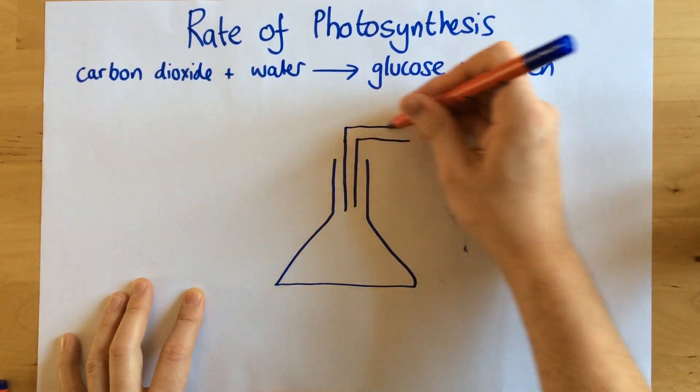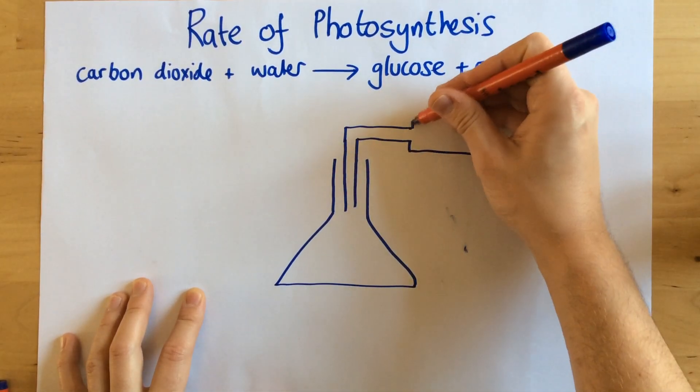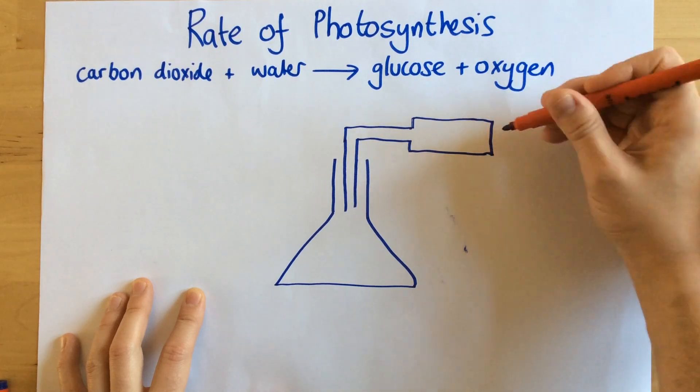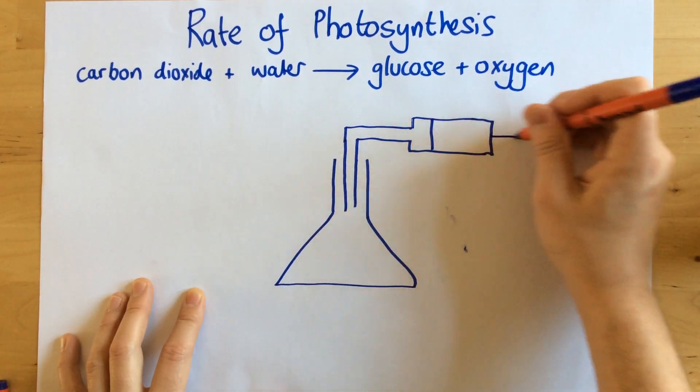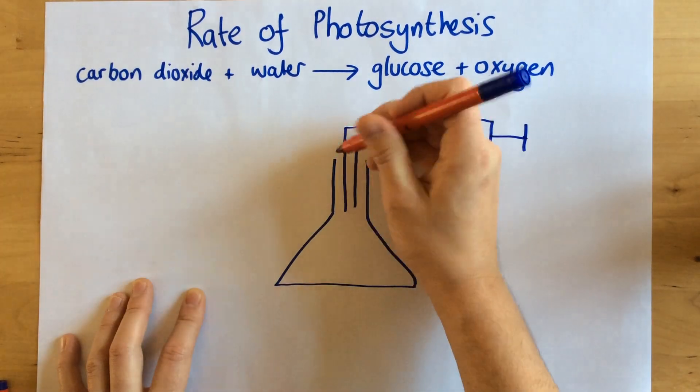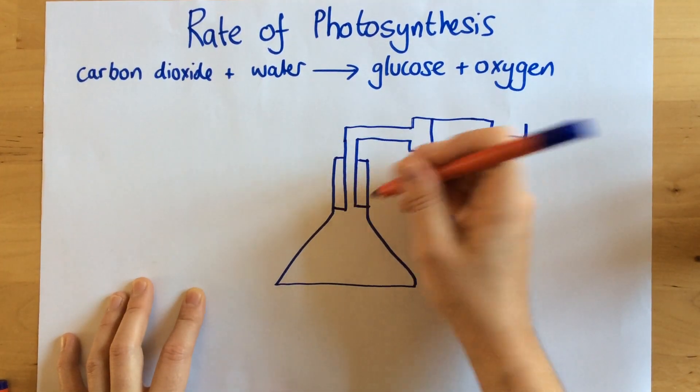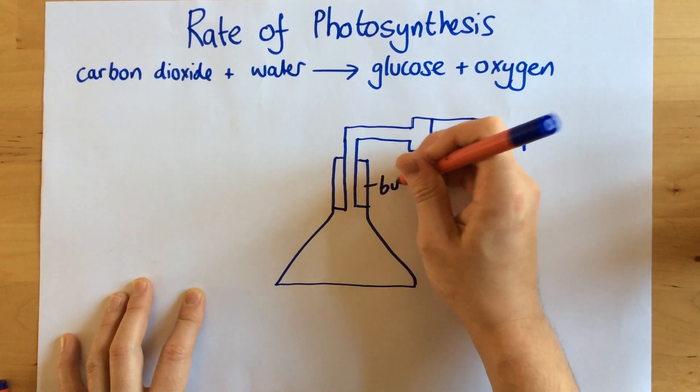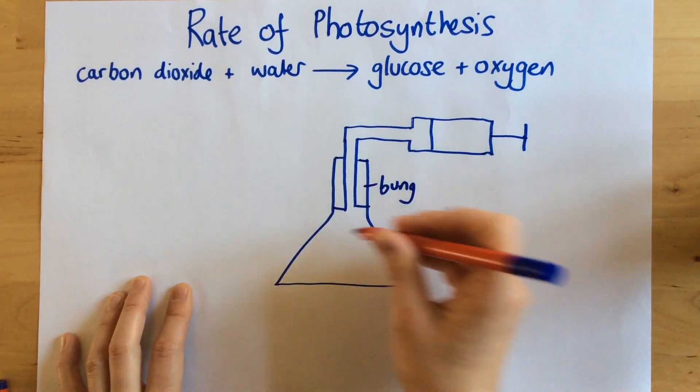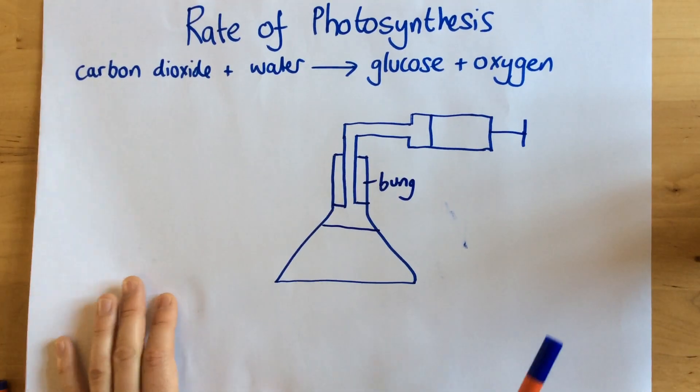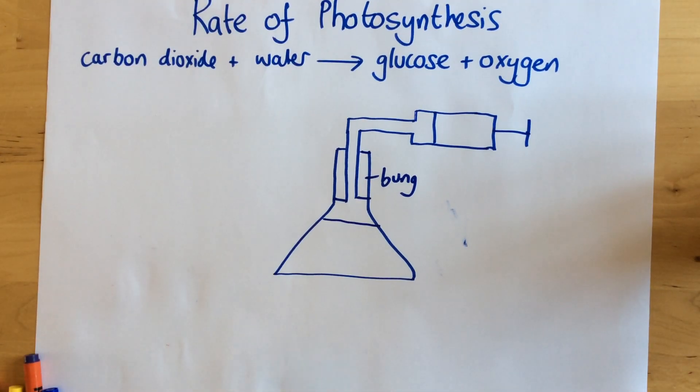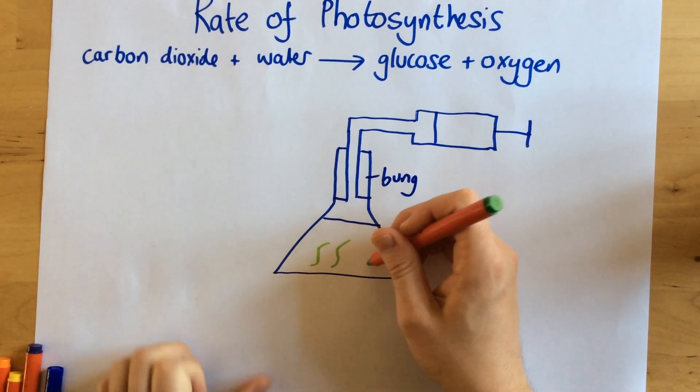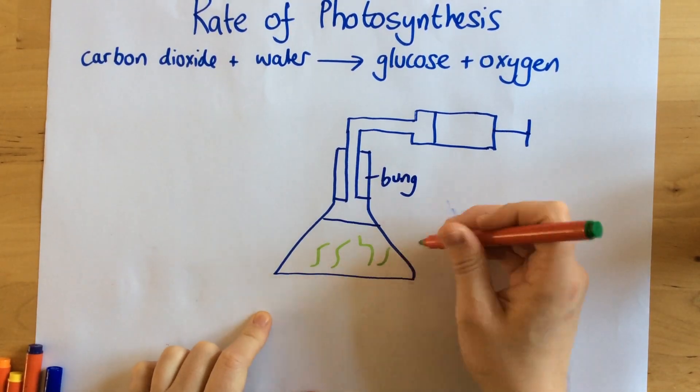So I'm just drawing some of the equipment right now. What we've essentially got here is a conical flask. And in the flask we have a bung in the top. And here we have some Canadian pondweed.